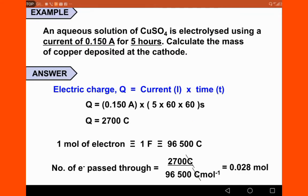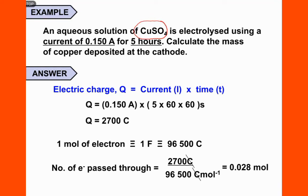Look at this example. An aqueous solution of copper sulfate is electrolyzed using a current of 0.150 amperes for five hours. Calculate the mass of copper deposited at the cathode. Since we are given the current I and the time T, we apply the formula Q equals I times T.